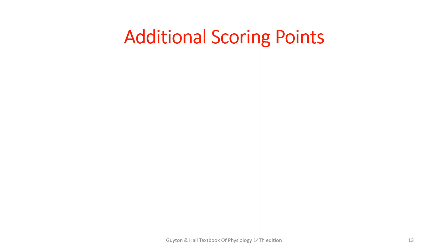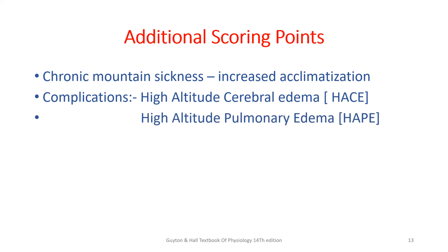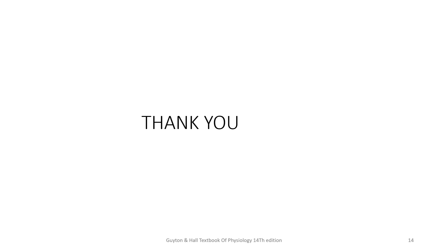Additional scoring points include chronic mountain sickness, in which all these changes of acclimatization are more pronounced, causing much more increase in red cell count, cardiac output, and thereby causing cardiac failure and more polycythemia. Two other important terms related to high altitude sickness are HACE and HAPE — high altitude cerebral edema and high altitude pulmonary edema. Adding such points will be useful. I hope this concept is clear. Thank you.